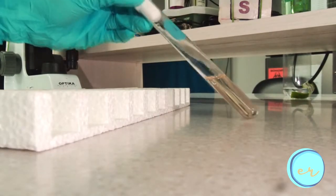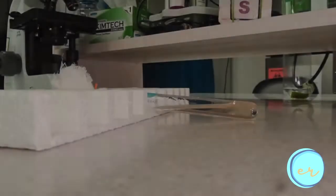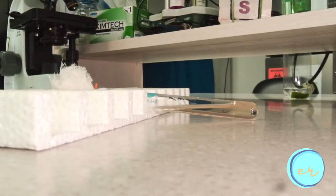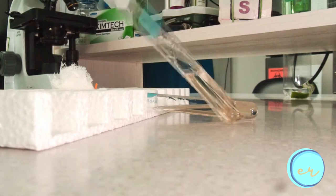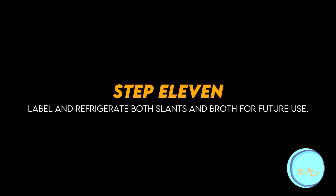For agar slants, lay sterile test tubes containing the agar medium across slanting boards and allow them to solidify. This may be done out of the hood. Let the sterile broth tubes cool completely. Refrigerate with sterile media for future use.